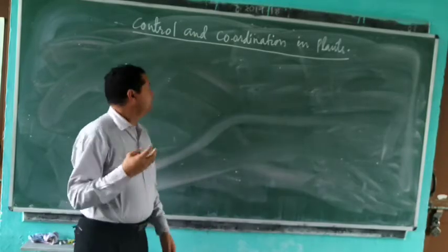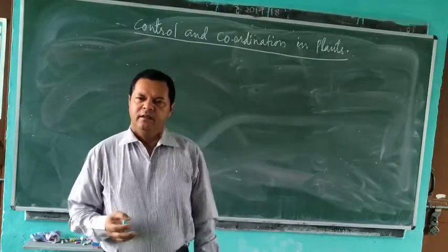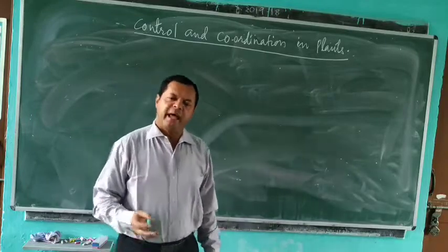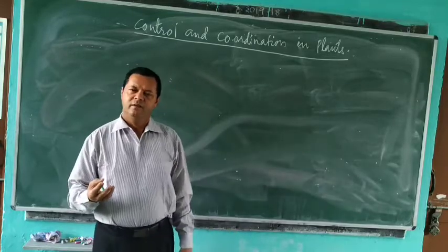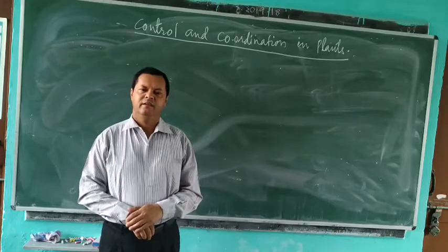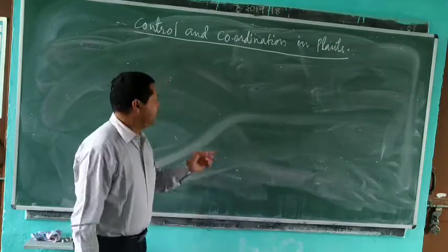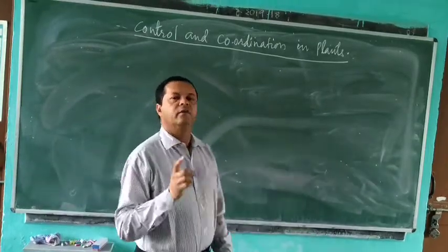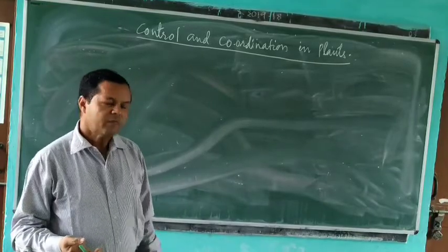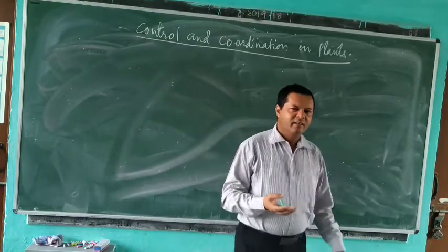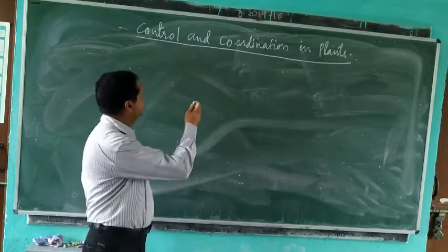Let us discuss control and coordination in plants. Do you think plants have a nervous system? Just think whether plants have a brain or do they have neurons. No. Plants do not have a nervous system. Plants do not have nervous cells or neurons. Then, how does the process of control and coordination take place in plants?